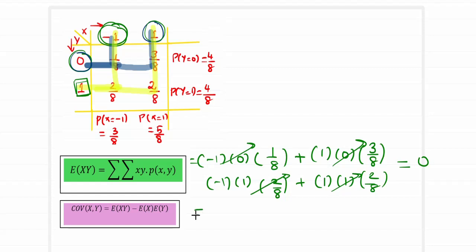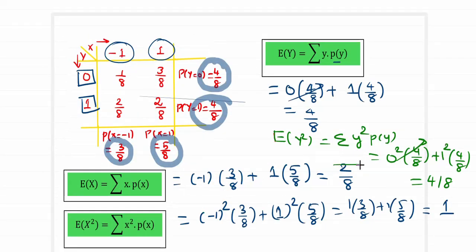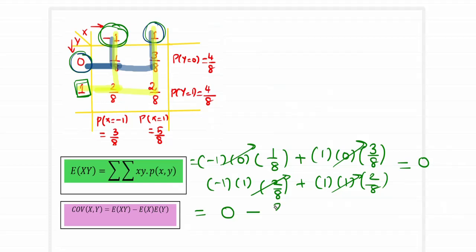Substituting into the covariance formula: covariance of x comma y equals E of XY minus E of X times E of Y, which is 0 minus 2 by 8 times 4 by 8. Simplifying, the 8s cancel leaving minus 1 by 8. So the covariance of random variable x comma y is estimated as minus 1 by 8, and the numerator is done.